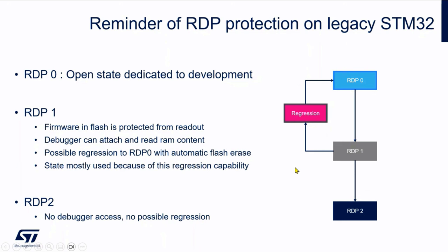There was a small change on the STM32 U5 where you have the ability to provision a key in the device that allows you to regress from RDP level 2 to RDP level 1 and then from level 1 to level 0. This was the first step toward better protection, because with RDP level 1 you still have some attack surface — for instance, you can read the RAM content. With H5 we started from this first step and went on to increase security and improve this mechanism.